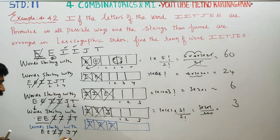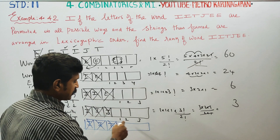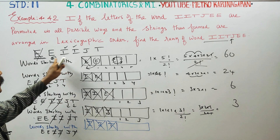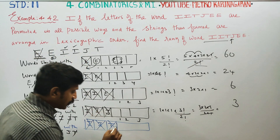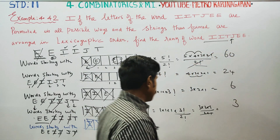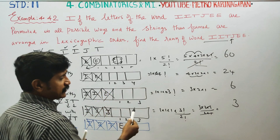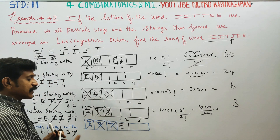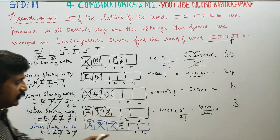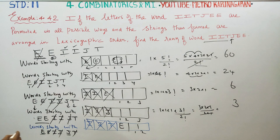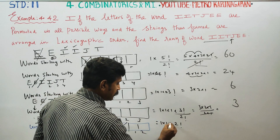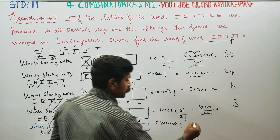IIT is coming, but there is E in alphabetical order before J. Then J is coming. In IIT, J is locked. Looking at the two vacancies — the two letters J and E — two places can be filled by two letters in two factorial ways: two ways.